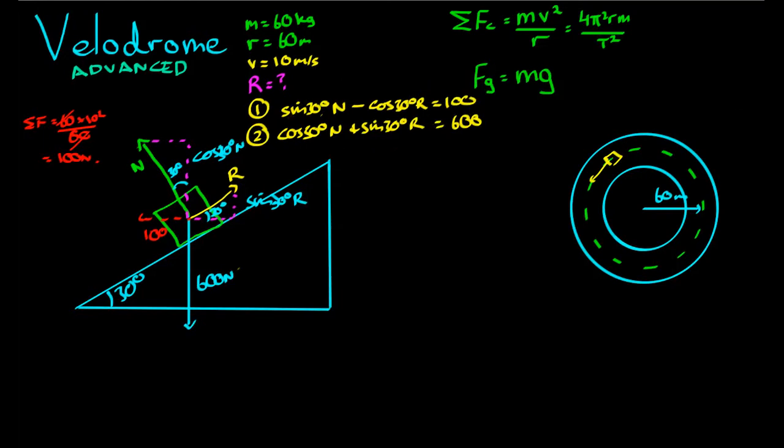Now the first step I like to take is to take all the sine 30 and cos 30 and turn that into decimals. Sine 30 degrees is a half, and cos 30 degrees is 0.866. So we'll rewrite them. Here's the first one: 0.5 N take away 0.866 R equals 100. And the second one: 0.866 N plus 0.5 R equals 600.